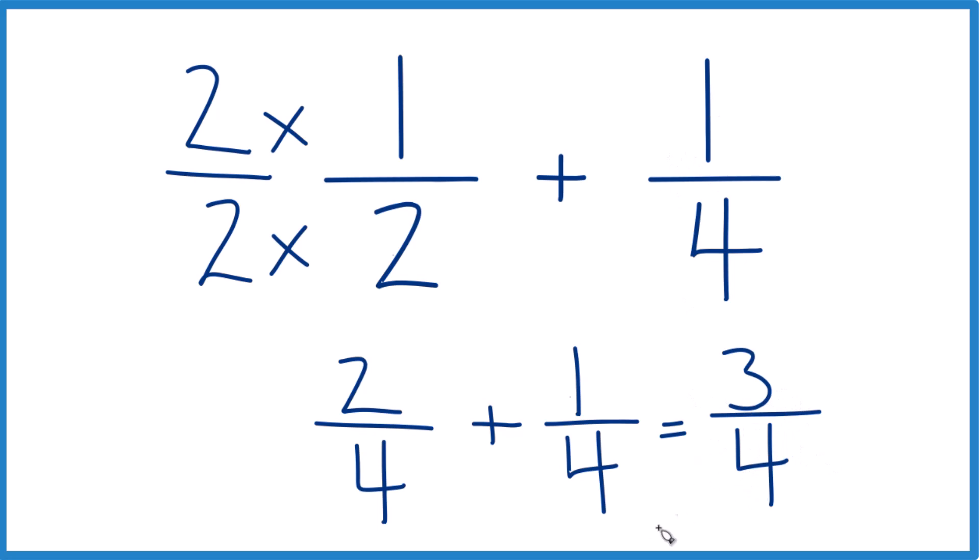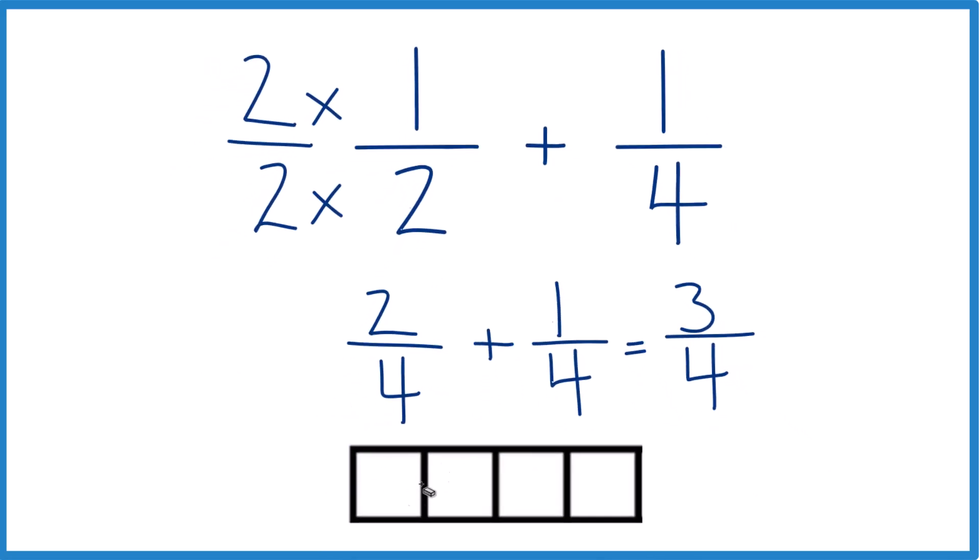And here's a good way to think about it. We have 1, 2, 3, 4 pieces. This is 4 fourths. So let's fill in 2 of them. 1, 2. And then we have 1 out of 4 here. Fill that in. And you can see, 2 fourths plus 1 fourth, that equals 3 fourths. And since 1 half and 2 fourths are the same, 1 half plus 1 fourth is 3 fourths. That's it.